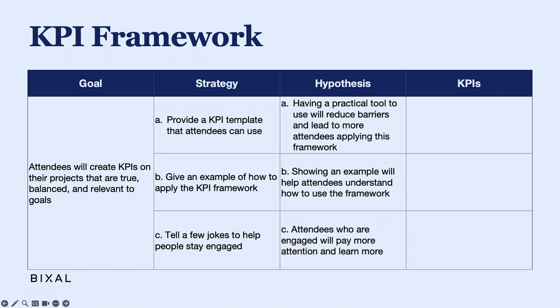These hypotheses are more detailed and make some assumptions — basically why I think my strategy will work. While it might be humbling if a hypothesis is not validated by the data, it will also lead us to re-examine our assumptions and consider new points of view. Hypothesis A: having a practical tool will reduce barriers and lead to more attendees applying the framework. Hypothesis B: showing examples improves understanding. Hypothesis C: those who are engaged will pay more attention and learn more. Let's check out the KPIs I came up with to measure this.